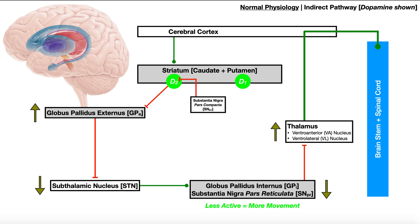Now let's throw in dopamine and the substantia nigra pars compacta. Regardless of which pathway we're looking at, dopamine is pro-movement — it's going to modulate the amount of movement by slightly increasing it in both cases. Because if the indirect pathway normally suppresses unwanted movement, maybe in some cases we don't want it totally suppressed. We don't want it to be an all-or-none phenomenon; we want to be able to modulate it. So maybe instead of totally eliminating movement, we just want to slow it down, not totally get rid of it. Dopamine is a way we can avoid complete inhibition and get mostly inhibition.